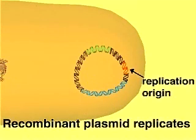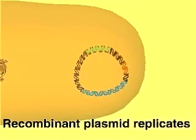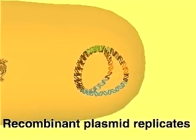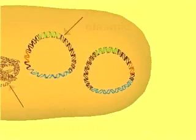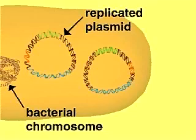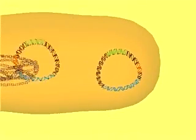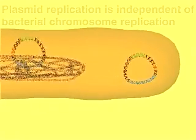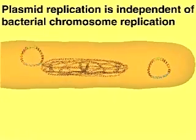The replication origin allows the plasmid to replicate by using the host cell's enzymes. Plasmid replication is independent of host cell division, but plasmids are distributed to each daughter cell when the host cell divides.